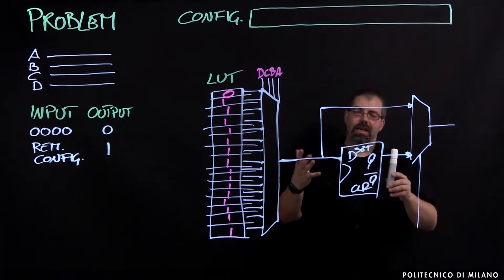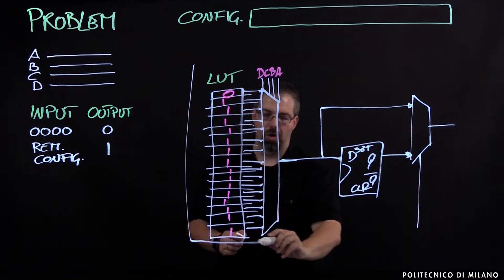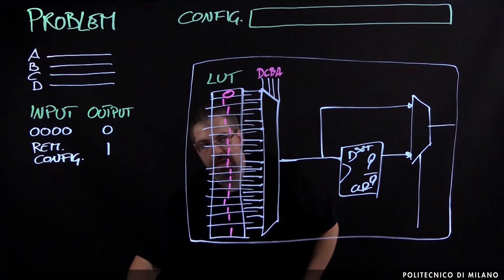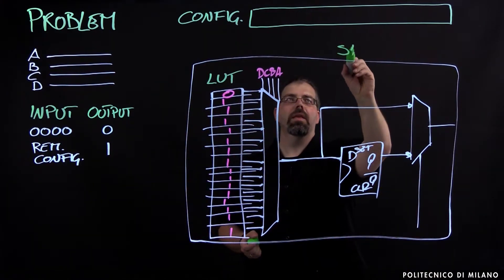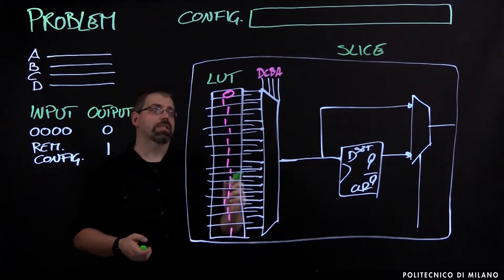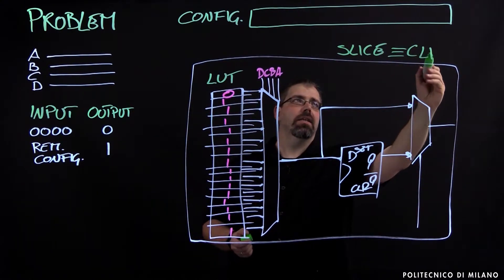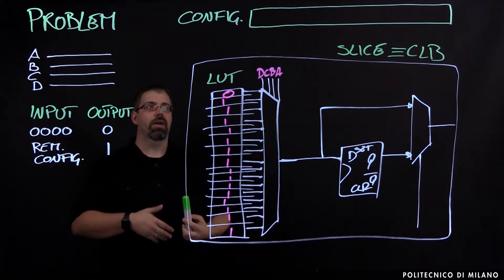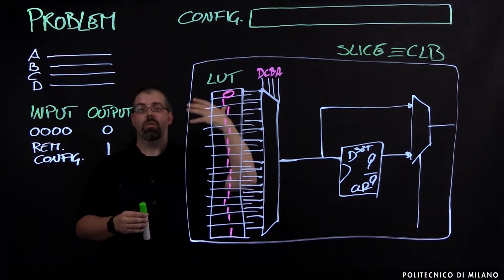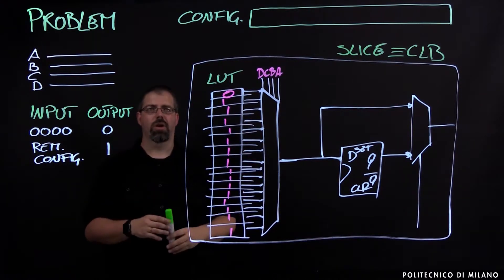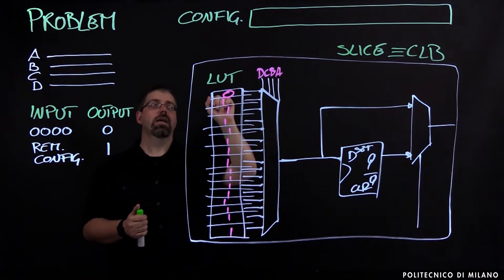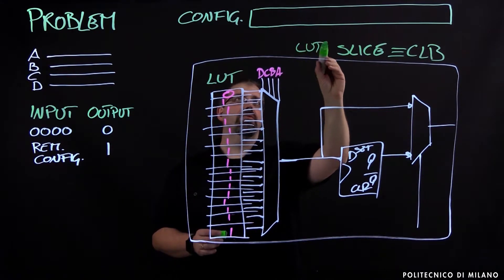This is basically a simplification of a structure called a slice — one of the slices that can be included in our CLB. For simplicity we're considering a situation where we work with just one slice per CLB. Usually we have more than one slice, and we may have two LUTs in one slice, multiple slices in the CLB, and so on. But just to keep it simple and understand how things work, we're going to say: one lookup table, one slice, one CLB.